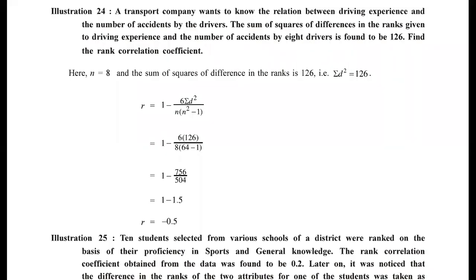Hello everyone. In this video we are going to discuss short and miscellaneous sums of Spearman's rank correlation method. In Illustration 24, a transport company wants to know the relation between driving experience and number of accidents by drivers. The sum of square of differences in ranks given to driving experience and number of accidents by eight drivers is found to be 126. So n=8 and Σd²=126.